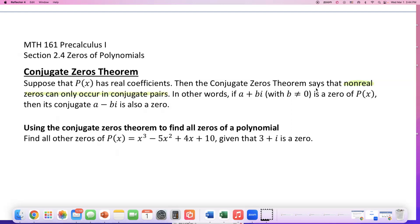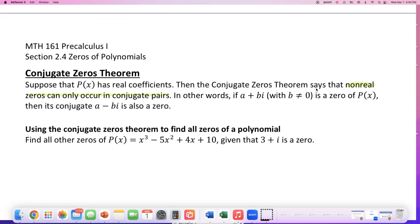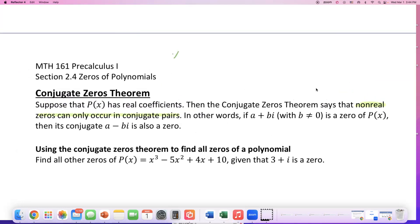For example, if x equals 5 plus 2i is a zero, then x equals 5 minus 2i must be a zero. They never come by itself, always come in with its pair.